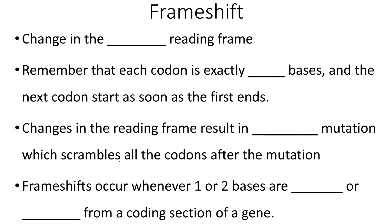A frameshift mutation has a change in the codon reading frame. Remember, each codon is exactly three bases or three letters long, and the next codon starts as soon as the first one ends. If you add a letter or take away a letter, all the codons after that point are going to be shifted around and no longer coding for the same amino acid. Changes in the reading frame result in a severe mutation, which scrambles all of the codons after that mutation.